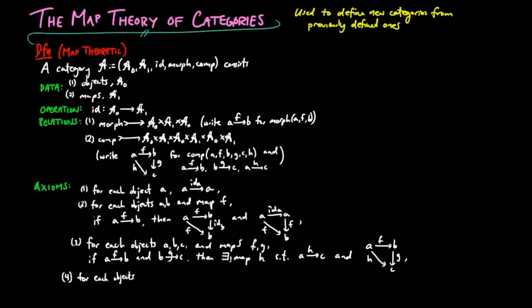Axiom 4: For each objects A, B, C, and D, and maps F, G, H, U, U', K, and K', if all the triangles in these two diagrams commute, then K equals K'.